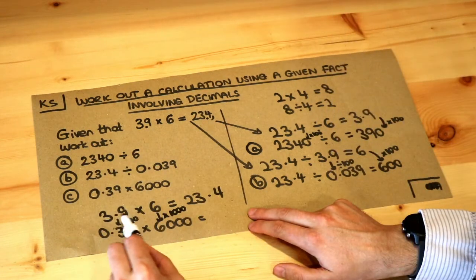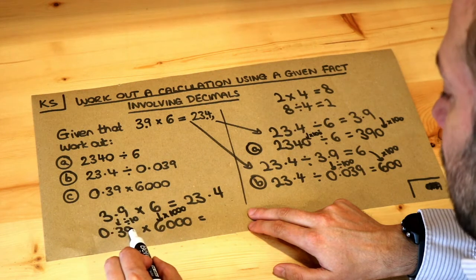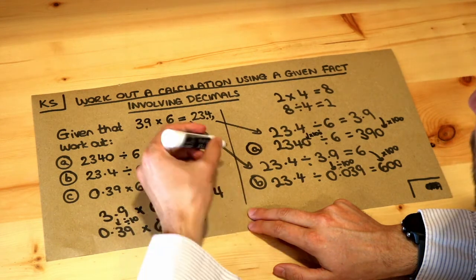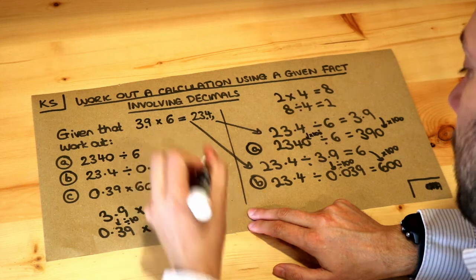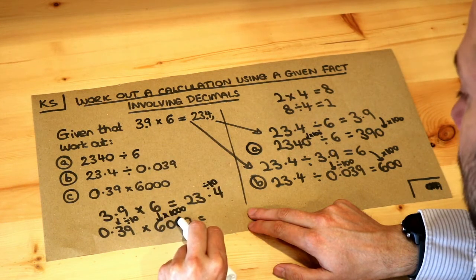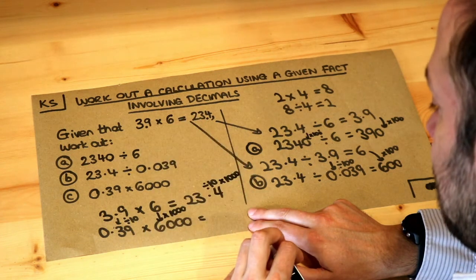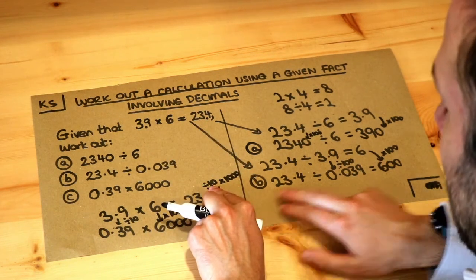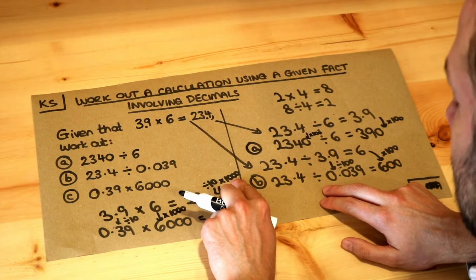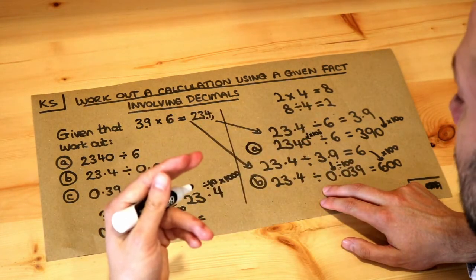Now, because this is a multiplication, if I make something in the multiplication 10 times smaller, that's overall going to make this 10 times smaller. But if I make this thing in the multiplication 1,000 times bigger, it's going to make the overall result 1,000 times bigger. So if I divide something by 10 and then times it by 1,000, that has the overall effect of timesing just by 100.